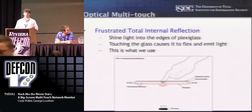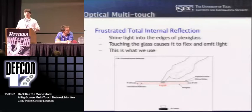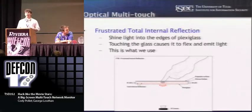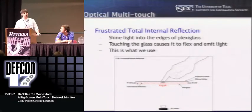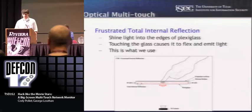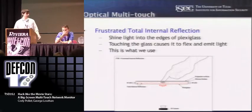FTIR is a method developed by Jeff Han from NYU. You basically take a sheet of plexiglass and build a frame of infrared LEDs around it such that the infrared LEDs shine into the plexiglass and are totally internally reflected. When you touch the surface, it changes the angle at which the light reflects and emits light out of the back — that's the method we use. With FTIR, you can use either an LCD panel or a projector to get an image onto the surface, and that's why you use infrared light, so it doesn't interfere. With diffused illumination you can really only use a projector, which is something we found out the hard way.